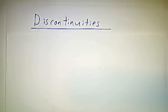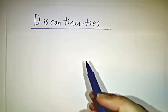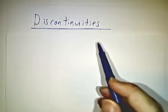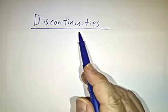In the last video, we talked about how to combine functions to get something that is continuous. Now I want to talk about the ways in which a function can fail to be continuous.